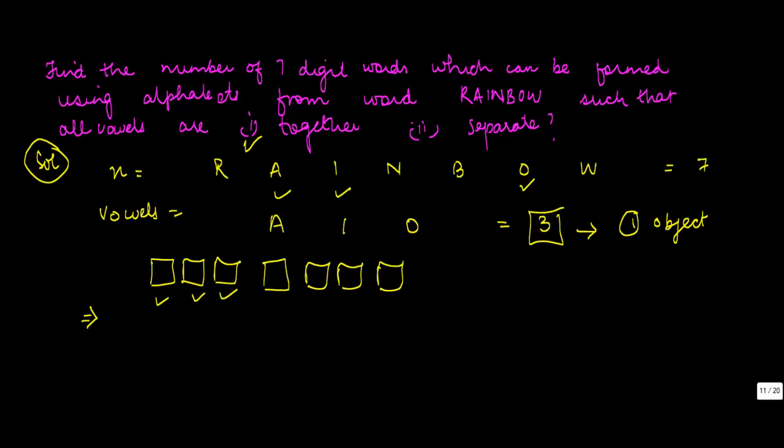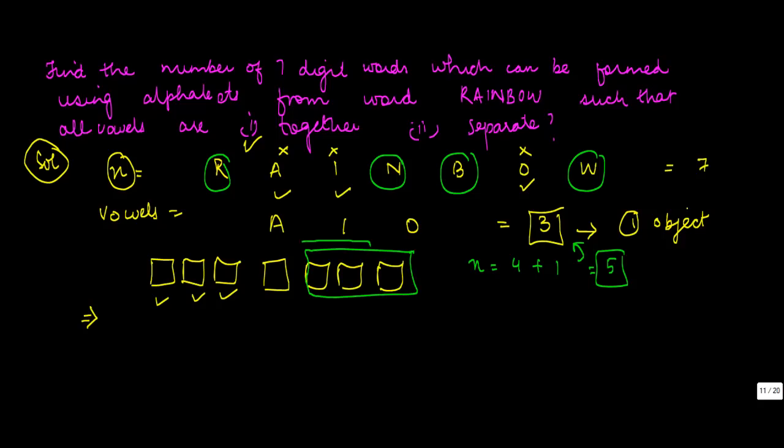If we do that, then what is the value of n? You cross out A, I, and O. The others are four letters, so n becomes four plus one when we count the vowels as one single object. You have five objects and five places, because if these are coming together, it's effectively one object. This can be anywhere.